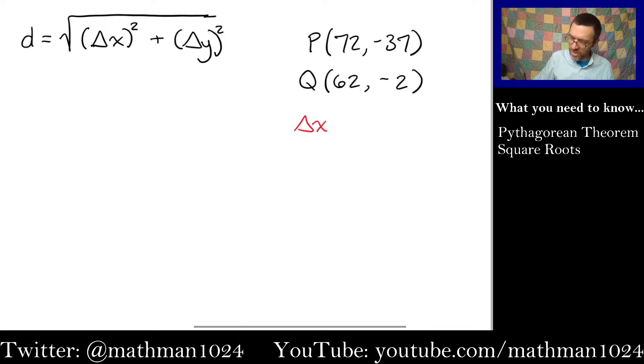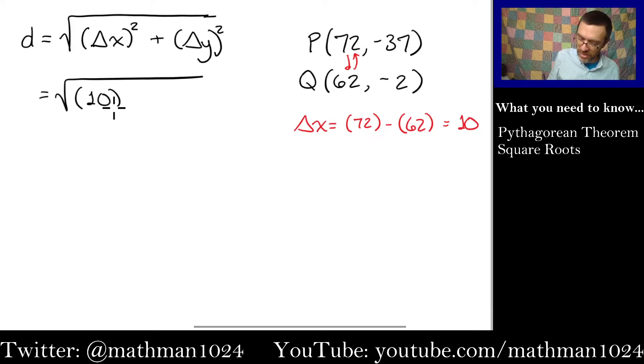So, as I look at the change in x, that's going to be the difference between these two numbers, between 72 and 62, and so the change in x is 10. And you can see that if you were to go from 72 to 62, that's a loss of 10. If you go from 62 to 72, that's a gain of 10. So, it doesn't really matter if it's positive or negative, so I'm just going to go ahead and say that this is a change in 10, so 10 squared.